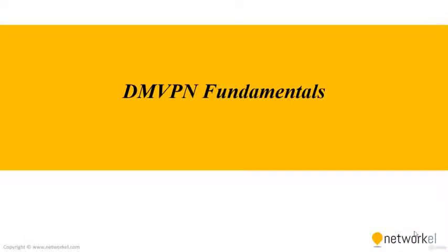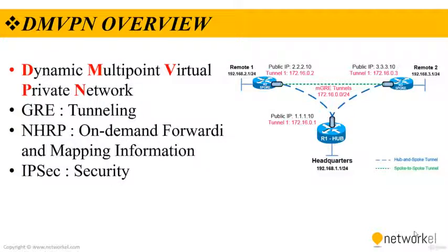In this section we will talk about DMVPN fundamentals — Dynamic Multipoint Virtual Private Network. DMVPN is a Cisco solution that provides a scalable VPN architecture. DMVPN uses Generic Routing Encapsulation (GRE) for tunneling, Next Hop Resolution Protocol (NHRP) for on-demand forwarding and mapping information, and IPSec to provide a secure overlay network to address the deficiencies of site-to-site VPN tunnels while providing full mesh connectivity.